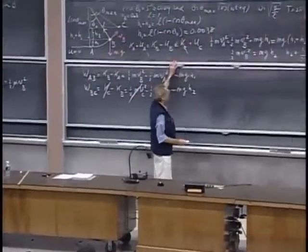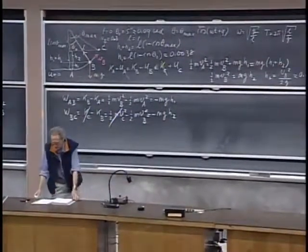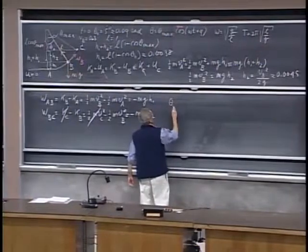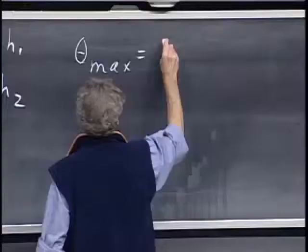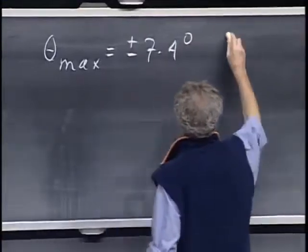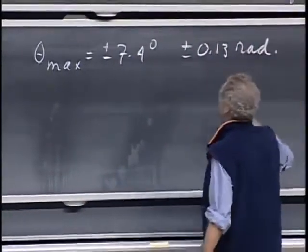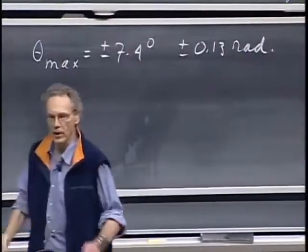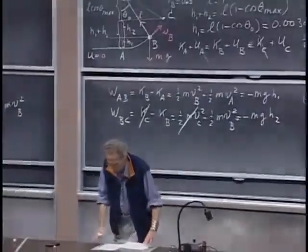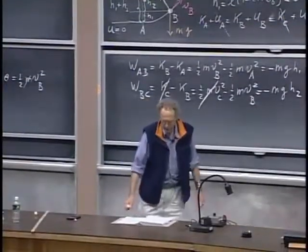For those who want numbers: theta-max comes out to plus or minus 7.4 degrees, or plus or minus 0.13 radians. You always get two angles from the cosine — there's nothing you can do about it.